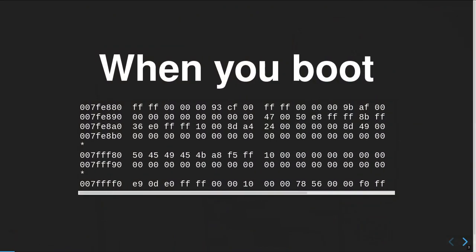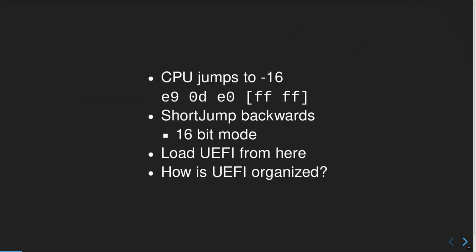The first thing you might want to know about firmware is: where does my CPU start executing when you boot? This is, for example, the end of a firmware image. The only interesting thing is in the last line, because your CPU jumps to minus 16 and it is in 16-bit mode. We are only looking at this instruction — it's a short jump backwards — so it will jump backwards into the image, which is mapped to the end of the RAM, and will load all the UEFI specifics from there.